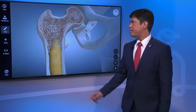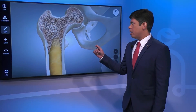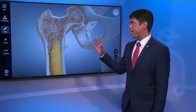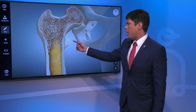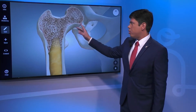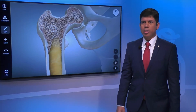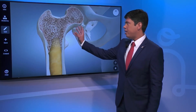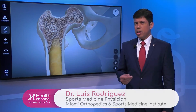Osteoporosis is a disease that affects the architecture of your bone. As the name itself means porous bone, we have two types of bone: on the edges, the cortical bone, which is stronger and more dense, and then on the inside you have your cancellous or trabecular bone, which has a different structure. The disease affects the architecture within your bone and it makes it weaker.